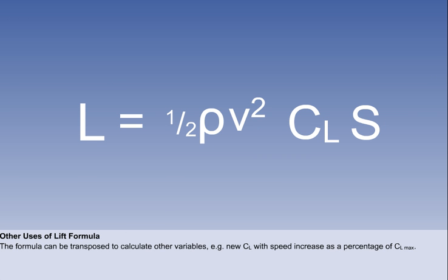The lift formula can be transposed in several ways to calculate variables which may be of interest to a professional aviator. For example, if speed is increased in level flight by 30% from the minimum level flight speed, we can calculate the new CL as a percentage of CL max.